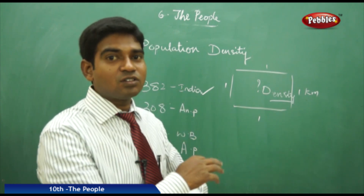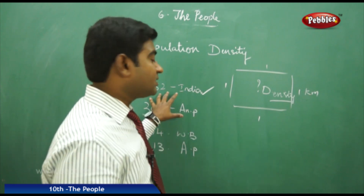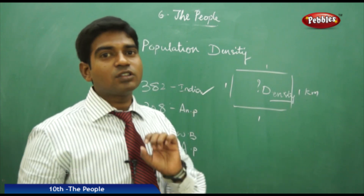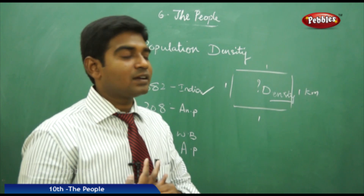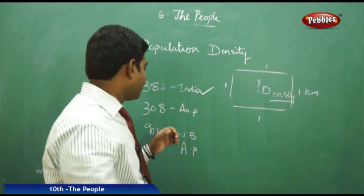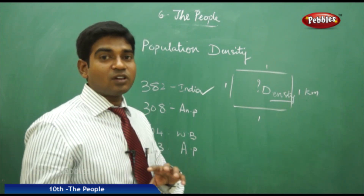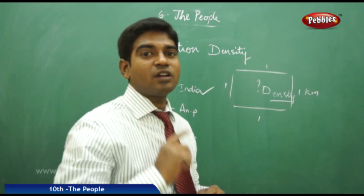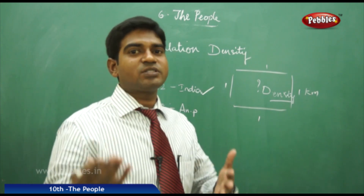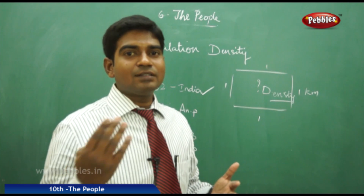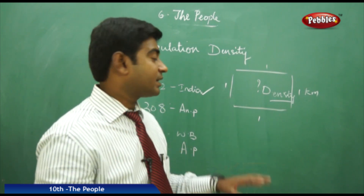For India overall the figure is 382, but it varies greatly by state. West Bengal has a density of 904, while Arunachal Pradesh has only 13. The average of 382 is taken across all states, with density varying significantly from place to place.